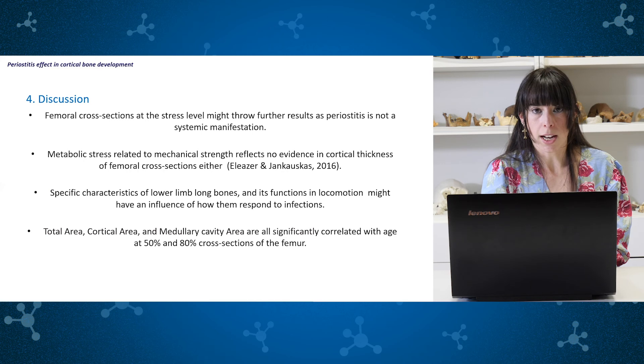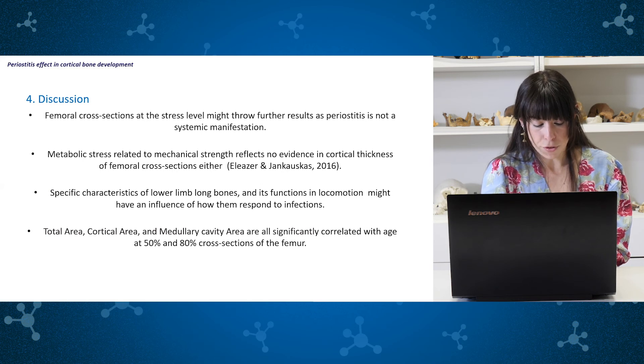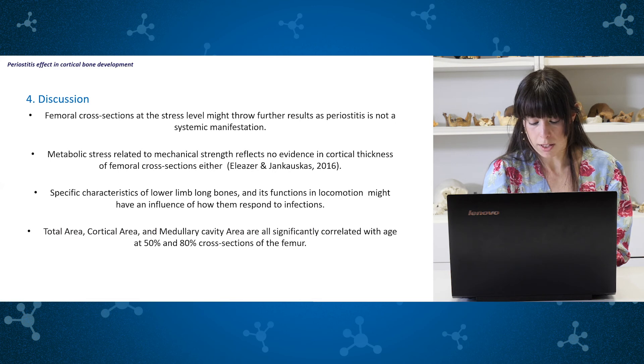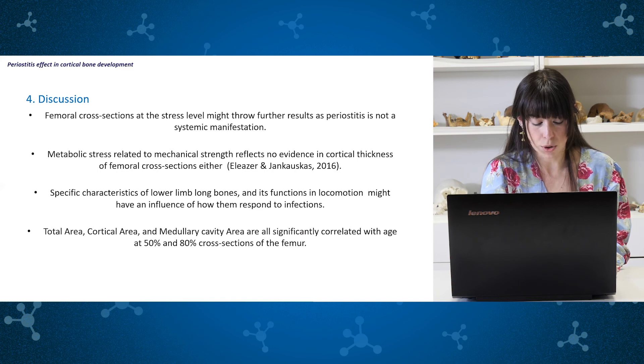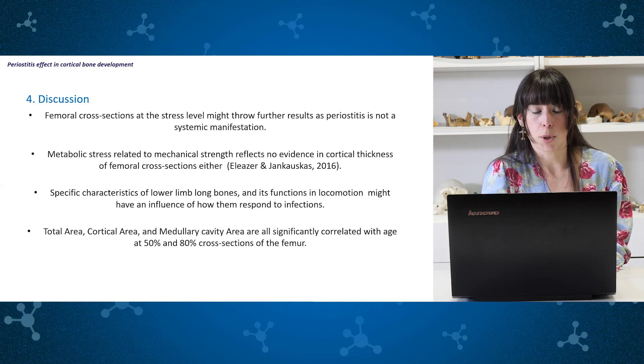Total area, cortical area and medullary area are all significantly correlated with age at cross sections of the femur. All three area measures generally show a gradual increase with age and similar regression lines in development, indicating roughly equal rates of periosteal and endosteal expansion in most sections of the femur.